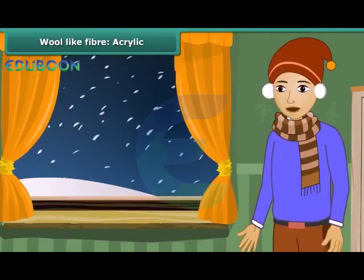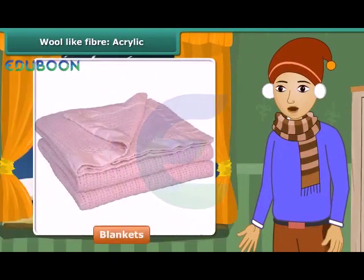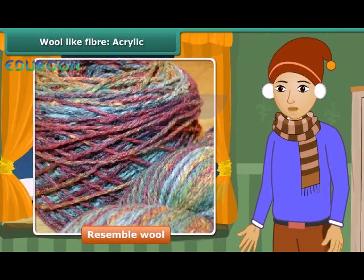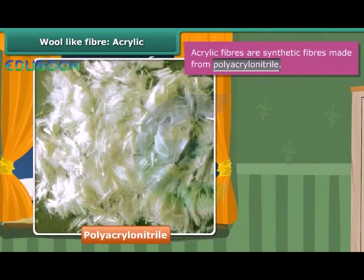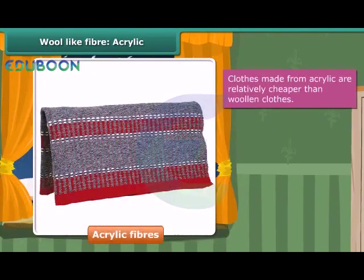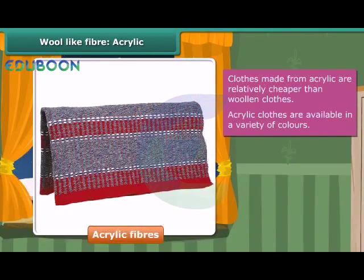To protect us against cold winters we wear sweaters and shawls and use blankets. Many of these are actually not made from natural wool, though they appear to resemble it. These are prepared from acrylic fibers, which are synthetic fibers made from polyacrylonitrile. Acrylic is lightweight, soft and warm with a wool-like feel. Clothes made from acrylic are relatively cheaper than natural wool and available in a variety of colors. However, acrylic tends to fuzz easily and does not insulate the wearer as well as wool or cashmere.